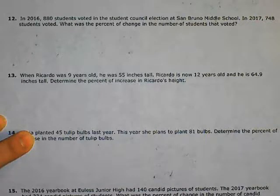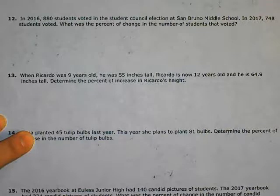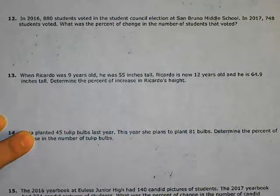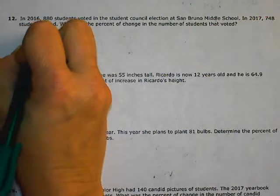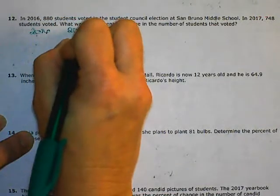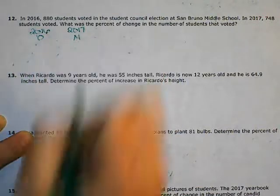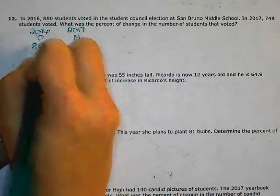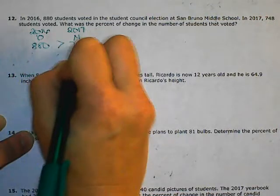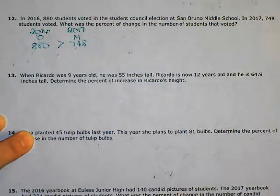Number 12: In 2016, 880 students voted in the student council election at San Bruno Middle School. In 2017, 748 students voted. What was the percent of change in the number of students that voted? Remember, 2016 comes before 2017, so that is the original and 2017 is the new. We are going from 880 students, which is greater than 748, so this will be a percent decrease.